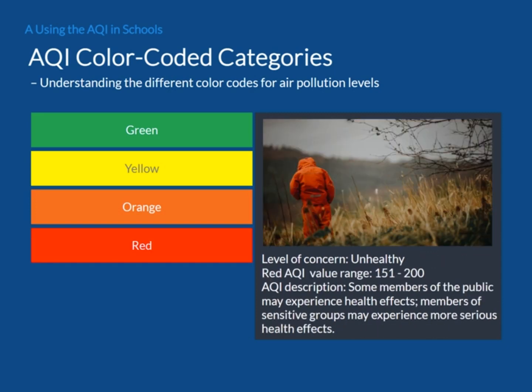Next, red. Here, the AQI value ranges from 151 to 200. The air quality is considered unhealthy. At this level, some members of the public may experience health effects. Members of sensitive groups, including children and those with asthma, may experience more serious health effects.